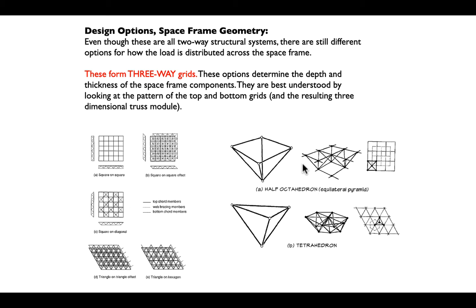A half-octahedron works on a square bay plan. A tetrahedron works on a triangular plan — more efficient, often more difficult to plan program into since we like squares in plan and triangles in section. There are families of space frames that just go on and on. McCormick Place is square-on-square, as is the original Mies Convention Hall. But with more complexity, we get more efficiency.